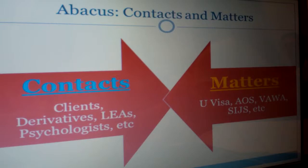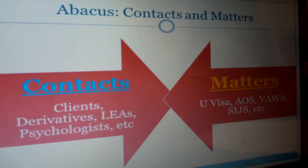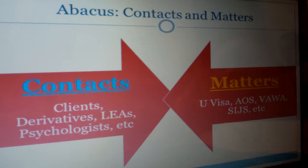Basically, whoever calls in, we can find them on Abacus using this system. That's why it's so important that right after your intake, you should be creating your Abacus profile for the case, which includes the matter page filled out with as much information as you know, plus a contact page for each derivative and the applicant filled in completely. So if they call tomorrow, even if it's one of the derivatives, we'll be able to find that derivative based on their contact page. That's also really important for when we get mail, because mail is not grouped by family — we'll get a random single derivative, and if that contact page is not updated correctly, we won't be able to track whose case that is.